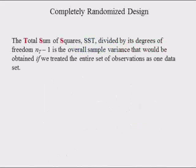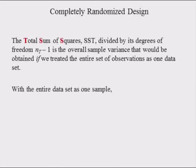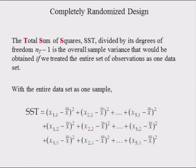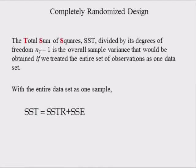The total sum of squares, denoted SST, divided by its degrees of freedom — the overall total number of observations in all samples minus 1 — is the overall sample variance obtained if we treated the entire set of observations as one data set. This complex equation can be written more compactly and rewritten more simply as just the sum of squares due to treatments plus the sum of squares due to errors.